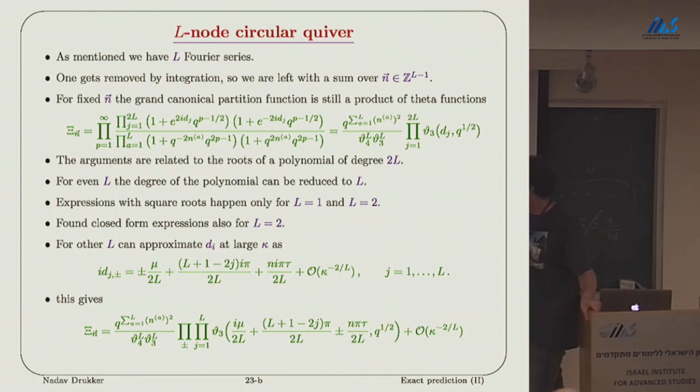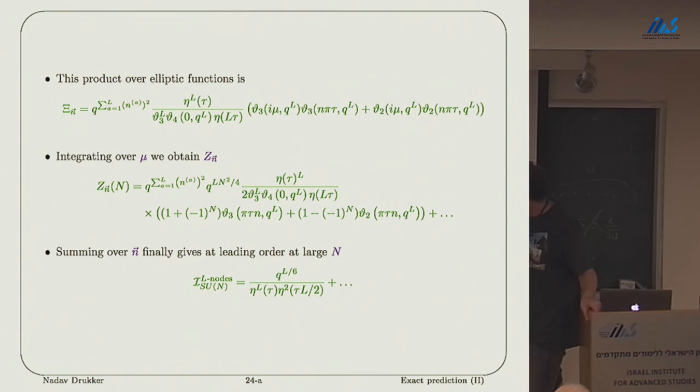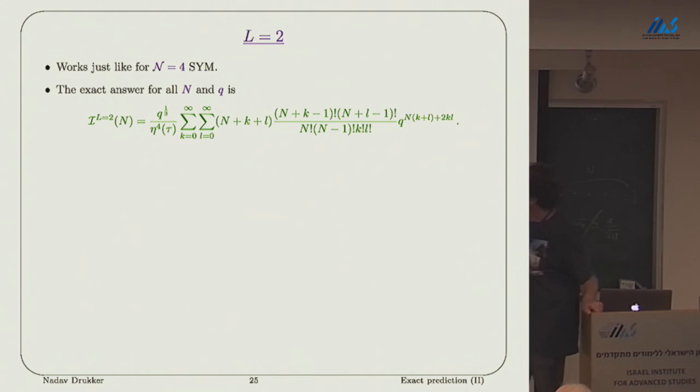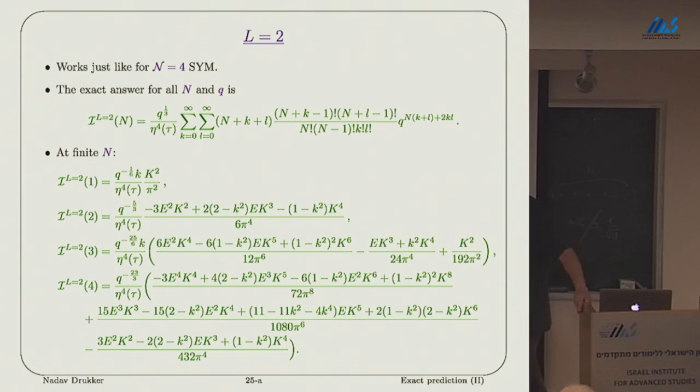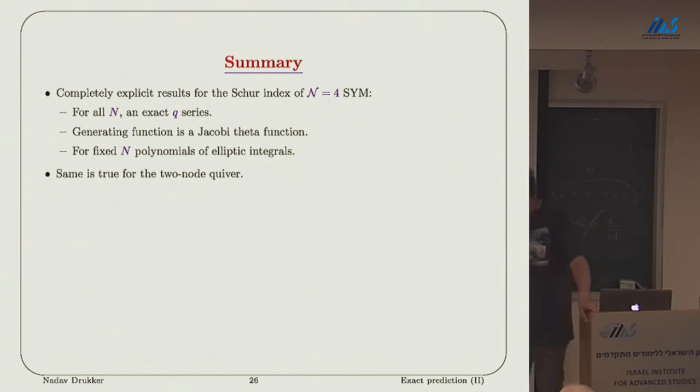We can write it in terms of theta functions, but these arguments of the theta functions become these roots of a complicated polynomial which depends on the vector N. We cannot factorize an arbitrary polynomial. Turns out that the degree of the polynomial is 2L. For L equals 1, it was quadratic. But for even L, the degree of the polynomial reduces to L. So we can actually do everything completely explicitly for L equals 2. We can also work at the large N limit for an arbitrary L and get some answers. For the L equals 2 case, we get another quadratic polynomial, which we can factor exactly. The analog expression, the Q expansion, has now two integers. So we seem to have two different types of D-branes. We also have the result for finite N for 1, 2, 3, 4. We have a code that would generate it to any finite order.